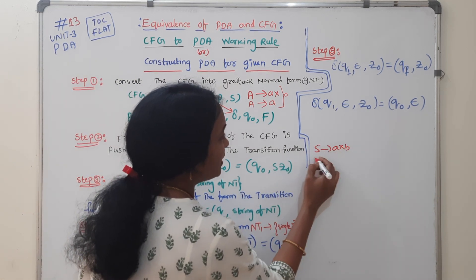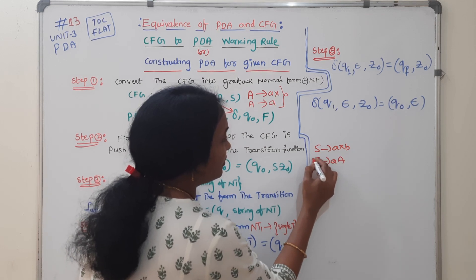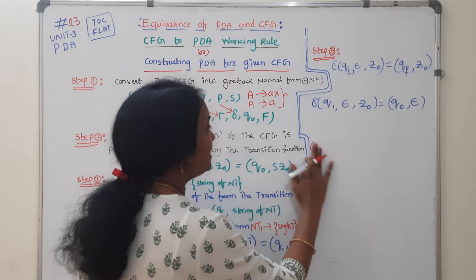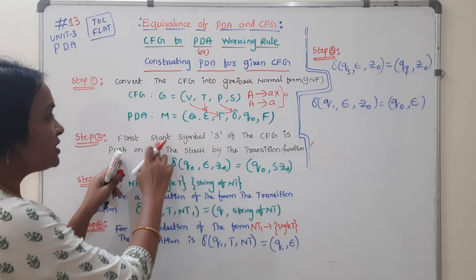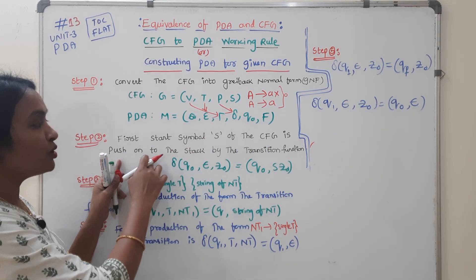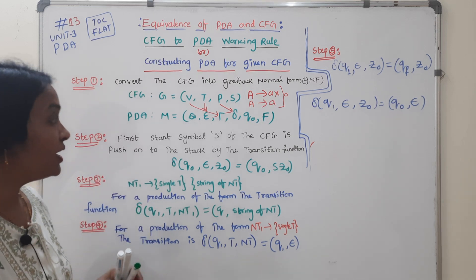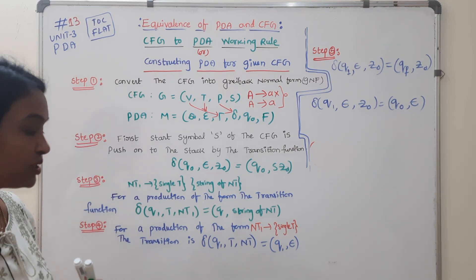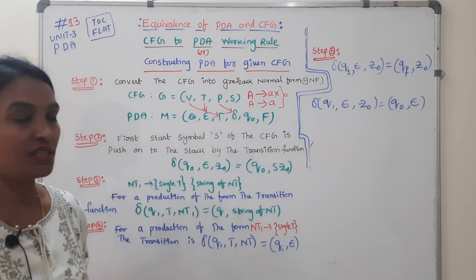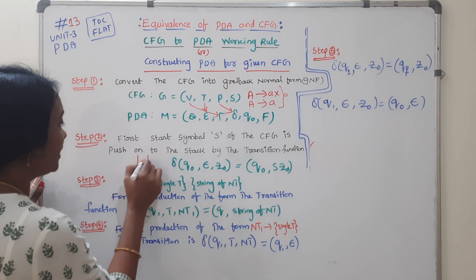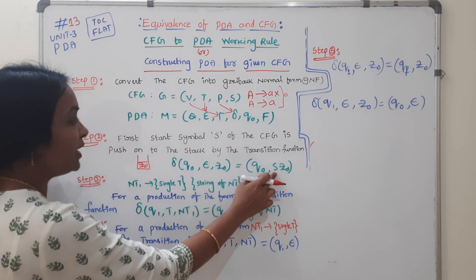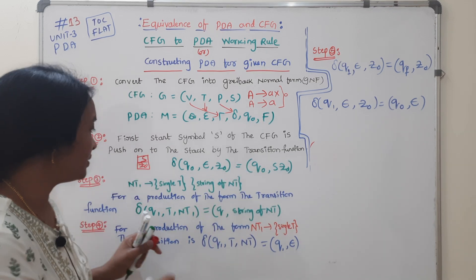For example: S tends to AXB, or S tends to AA, and A tends to some production. The first starting symbol S of the CFG is pushed onto the stack by the transition function. The transition function pushes the S symbol to the top of the stack. In the stack there is Z (bottom of stack marker), and no more operation.